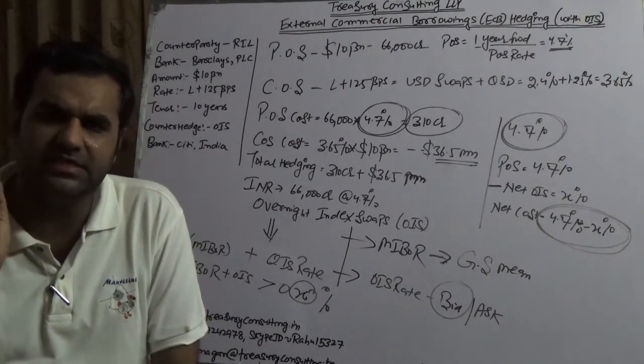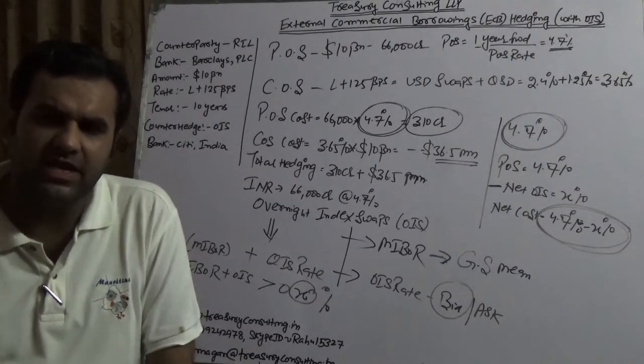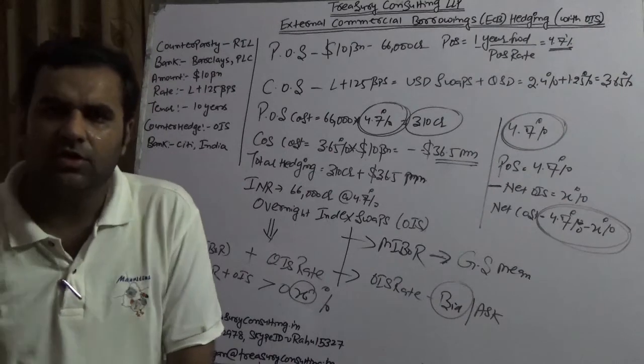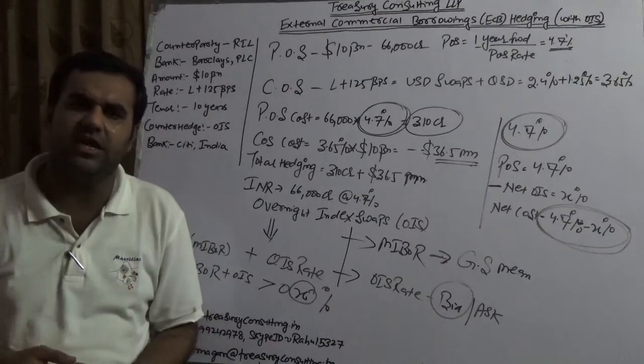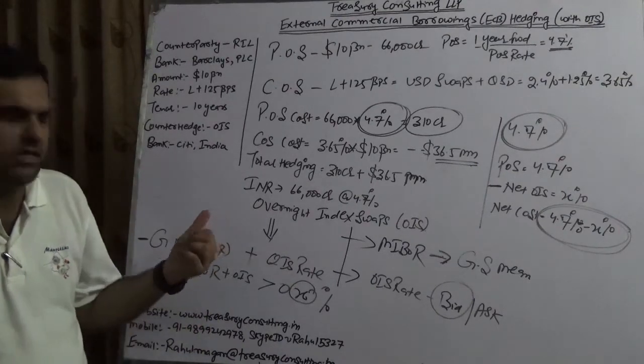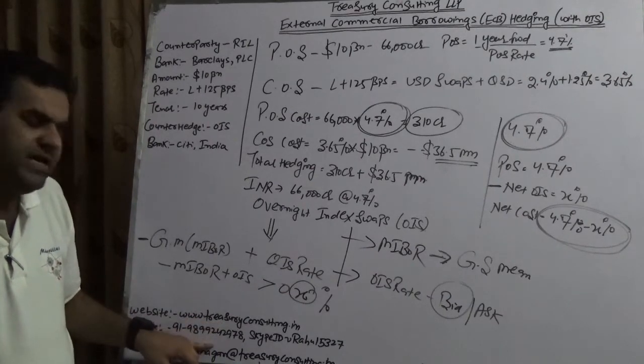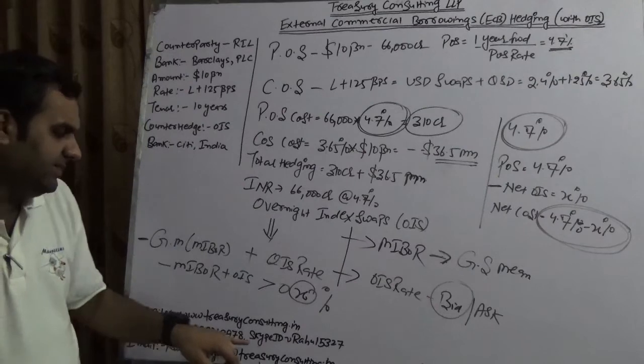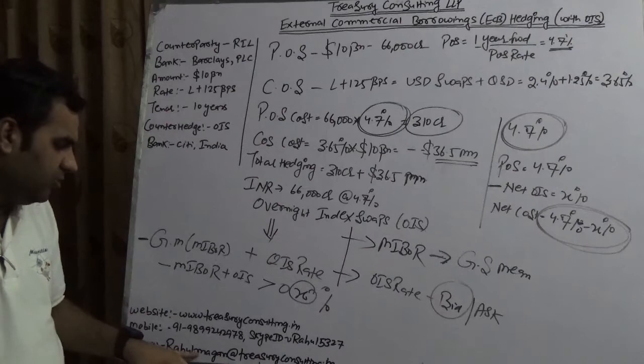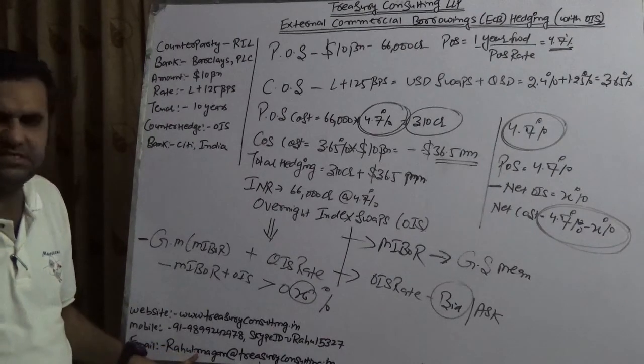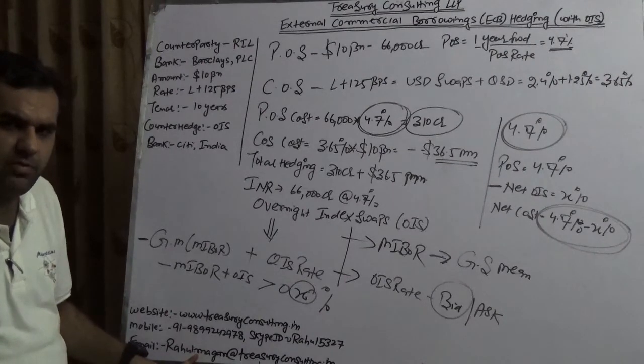I repeat: OIS is a hedging of local currency asset or liability in local currency books and in local country. Thank you very much. In case you have any requirement pertaining to any kind of training and any kind of consulting pertaining to ECB, our website is www.treasuryconsulting.in and my mobile is 9899242978, while my Skype ID is rahul5327. You can also email me at rahul.magan@treasuryconsulting.in. We would like to thank you very much, and soon we are coming in a big way. Thank you.